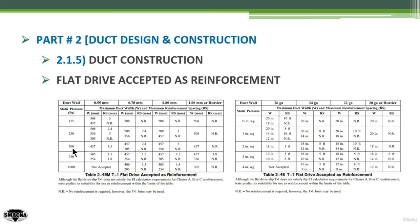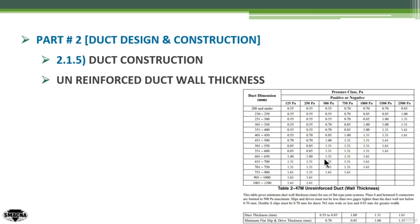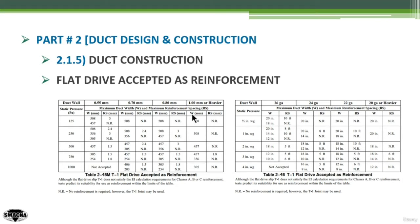Let's continue with our example of a 700x700 duct at 500 Pascal operating pressure. I will enter by 500 as my row and intersect it with the vertical duct sheet metal thickness column. Going back to the previous slide, 700 mm gives me a 1.31 duct sheet metal thickness at 500 Pascal. So I will use the column for 1 mm or heavier at 500 Pascal operating pressure.